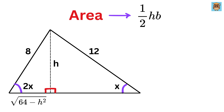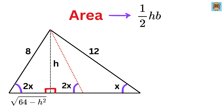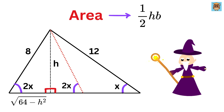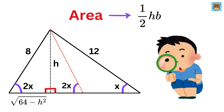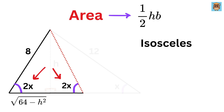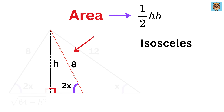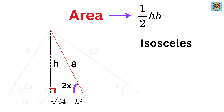We have not even used the information that this angle is 2x and this angle is x. Draw this line such that this angle is equal to 2x — here comes the first magic. This triangle is an isosceles triangle as both these angles are equal. Thus, if this side length is 8, then this length is also equal to 8. Looking at this right triangle, if this is 8 and this is h, then this will be the square root of 64 minus h squared as well.